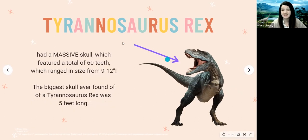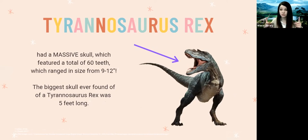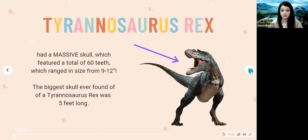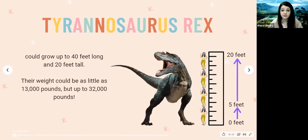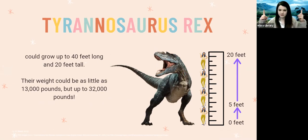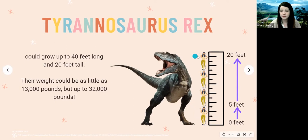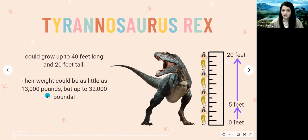Tyrannosaurus rex also had a massive skull and 60 teeth. The smallest tooth was nine inches long and the biggest was 12 inches — 12 inches is a whole ruler. The biggest skull ever found was five feet long. T-Rex could grow up to 40 feet long from head to tail, and up to 20 feet tall — that's like four humans stacked on top of each other. Their weight ranged hugely, from 13,000 pounds up to 32,000 pounds.